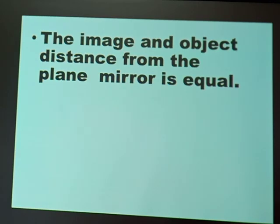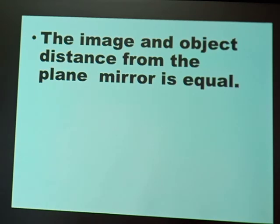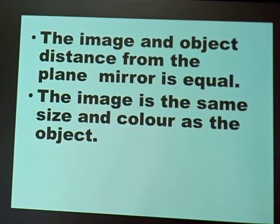The fourth characteristic: the image and object distance from the plane mirror is equal. If you look at yourself through a mirror, you will discover that the distance of yourself from the mirror is the same as the distance of the image formed from the mirror. And then lastly, the image is the same size and color as the object.